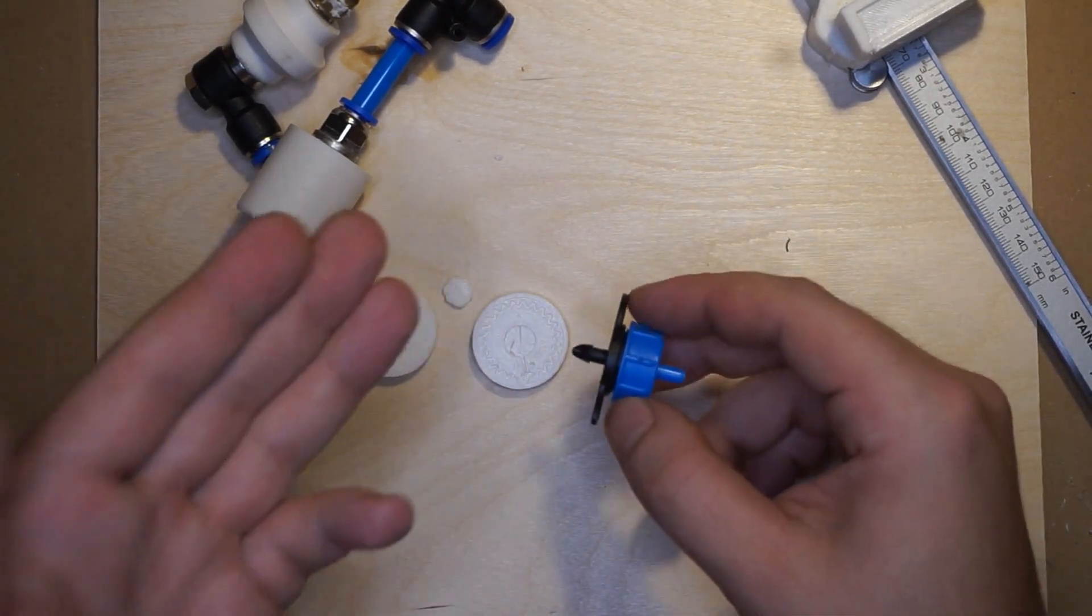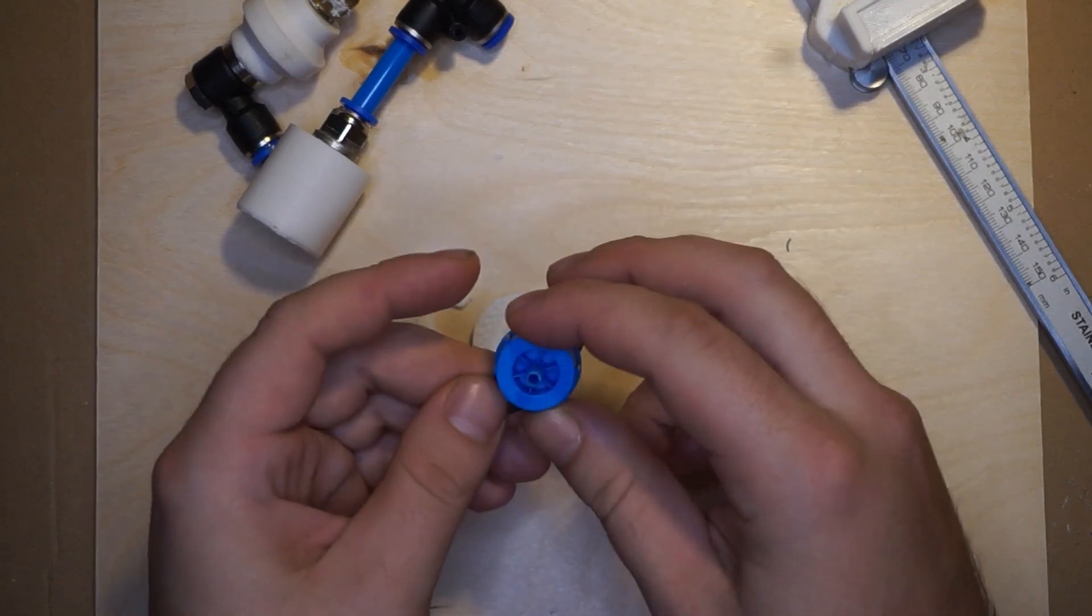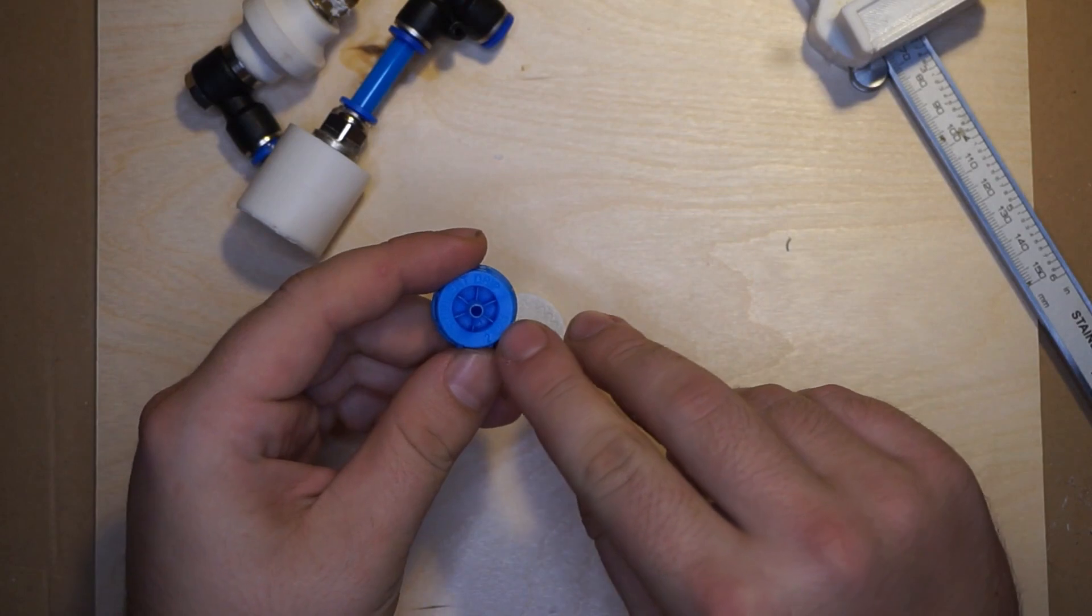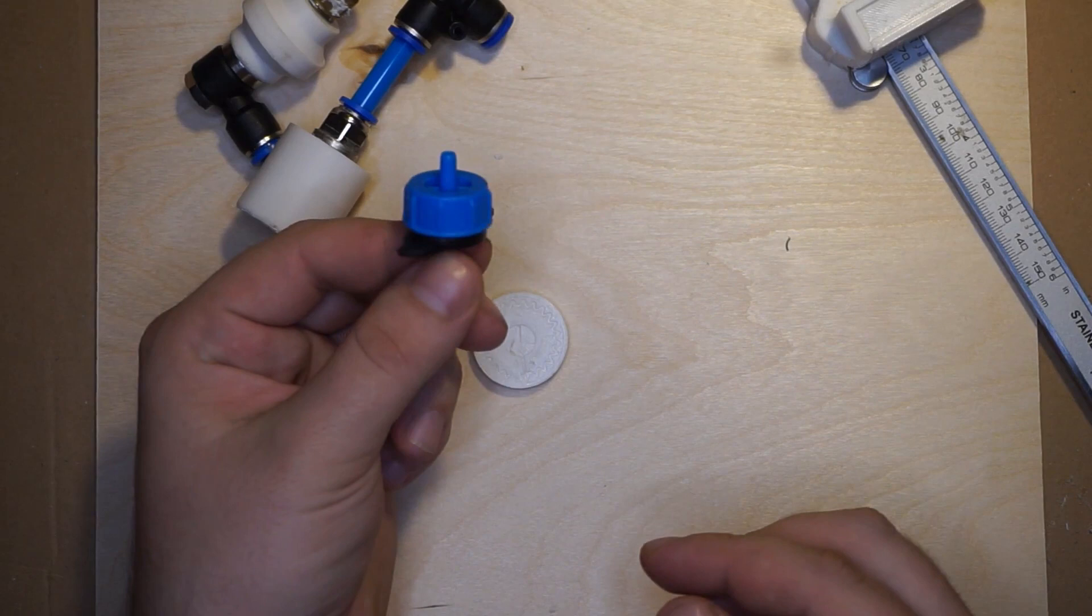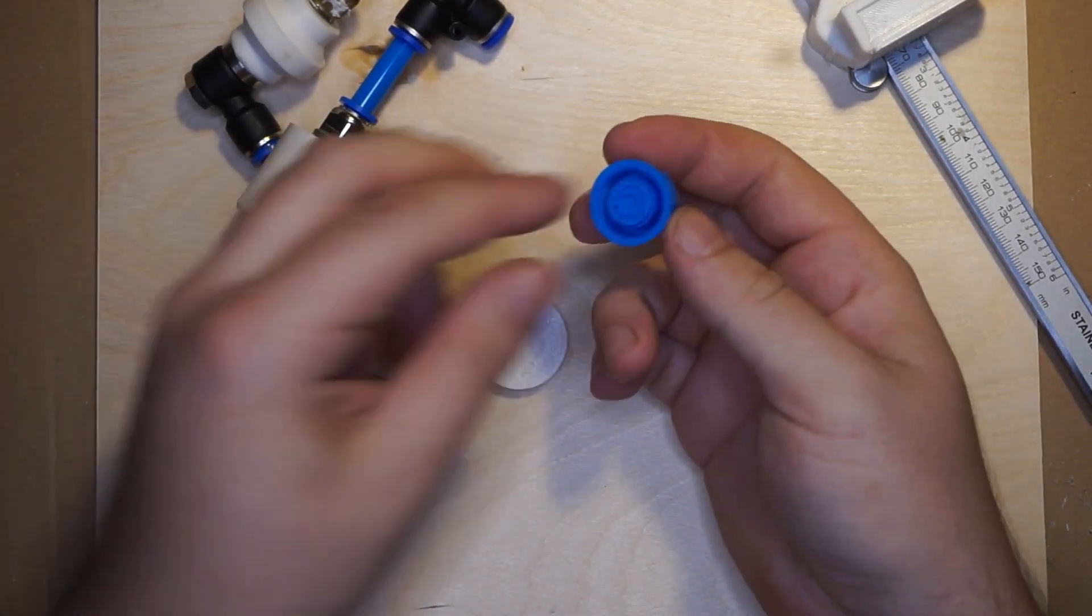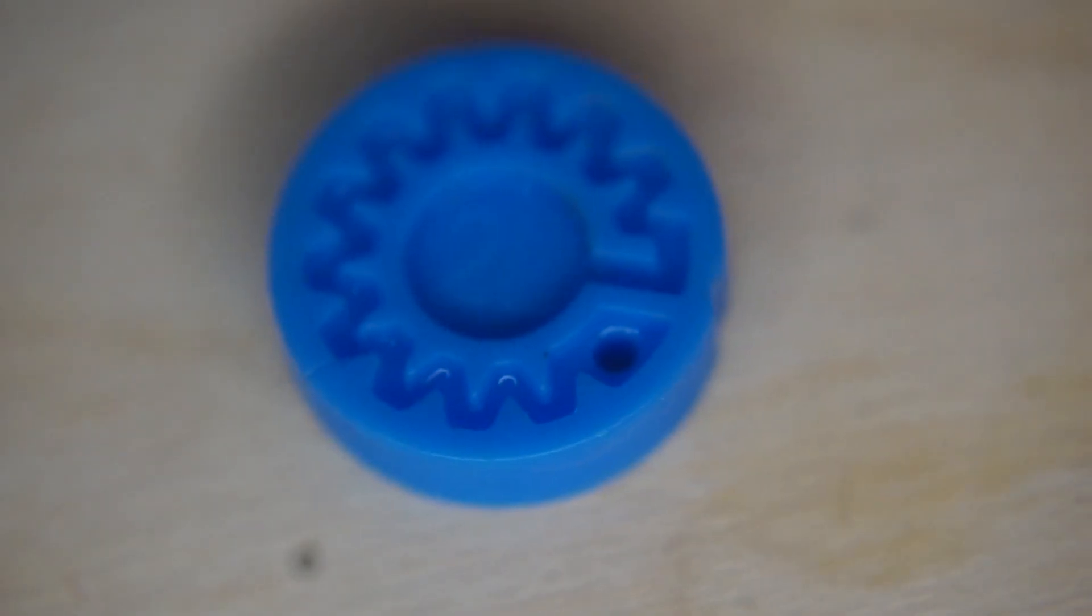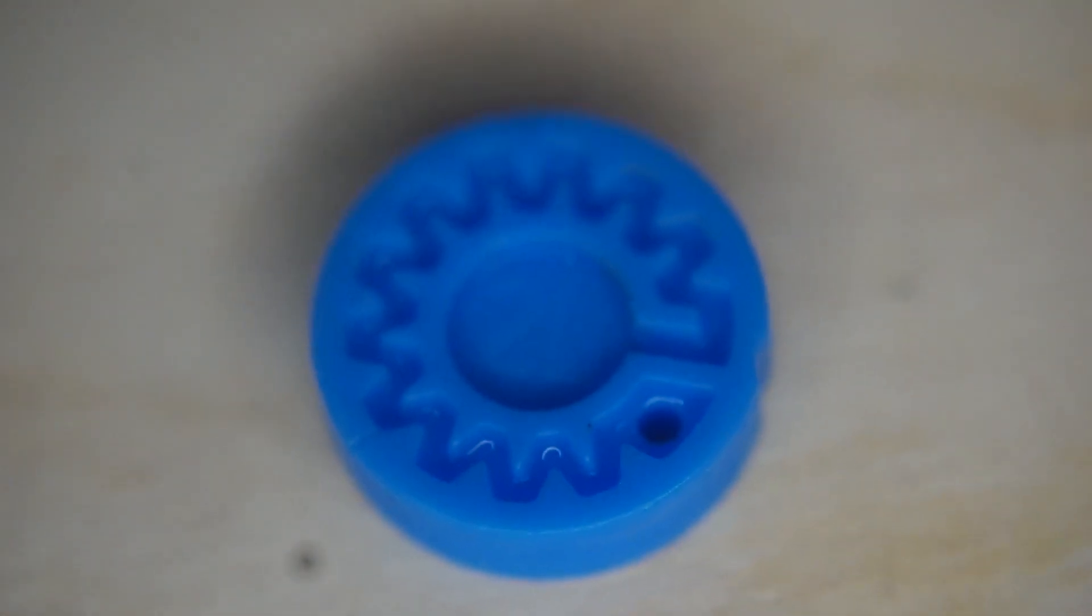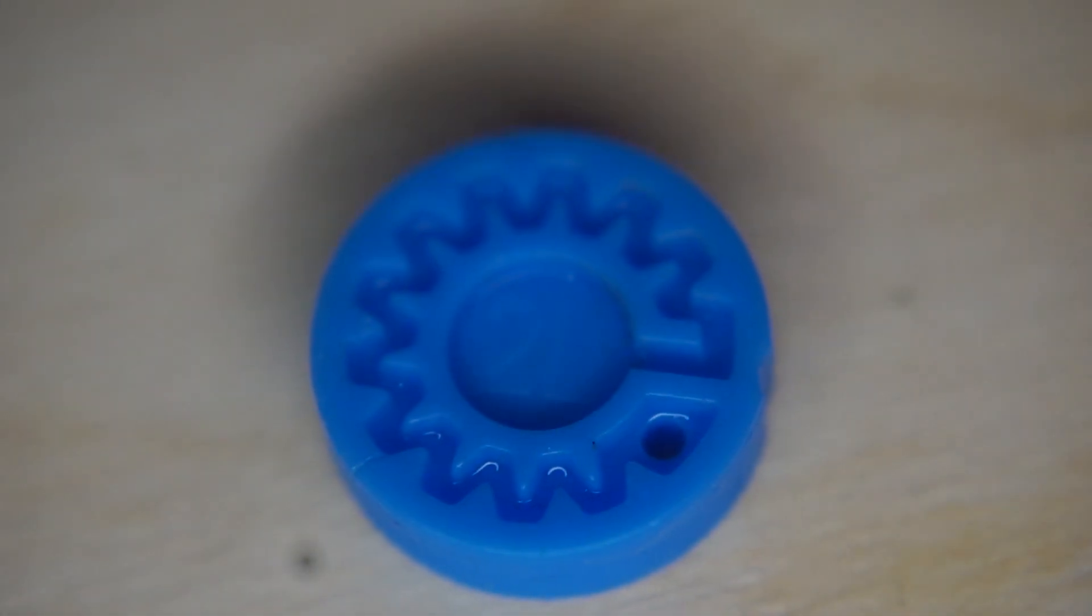In this case, 2 liters per hour. I asked myself how do those little things work, and so I opened one up. In the middle I found this disc. This disc is quite sturdy. It isn't a silicon disc.